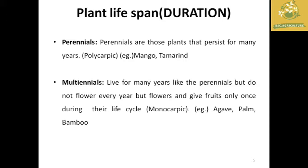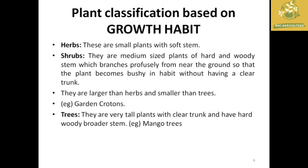The fourth classification is multiannuals — plants that live for many years but do not flower every year; they flower and give fruit only once during their life cycle. These are known as monocarpic plants. Examples include date palm and bamboo. The key difference from perennials is that perennials give reproductive output each year once they reach maturity, while multiannuals do so only once at the end of their life cycle.